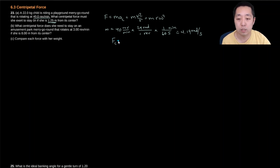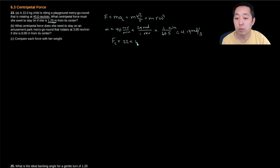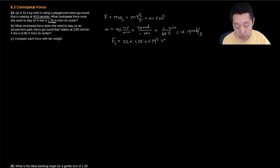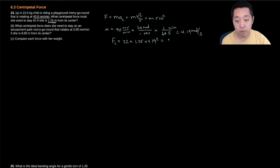The mass is 22, times the radius which is 1.25, times 4.19 squared. We get 483 newtons.